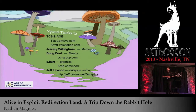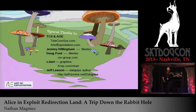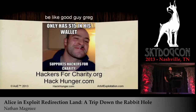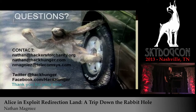Those are all the different tools for doing redirection. Special thanks to TCS and AOE for sending me out here. Thanks to Jeremy Willingham — my mentor since the Marine Corps — and Doug Ford. Check out CSR Group and Art of Exploitation.com. Graphics were done by C-Bar. Thanks to DataPipe author Jeff Lawson for providing this tool. Also, be like Good Guy Greg — stop by Hackers for Charity, give them some money, buy a t-shirt. They're tax deductible and they need your help. Any questions?